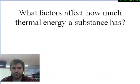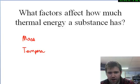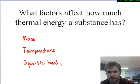So what factors affect how much thermal energy a substance has? There's actually three main factors. The first one is mass, or how much substance you have. The second one is temperature, how hot or cold is the substance. And the third one is something called specific heat, or you'll also see that written as the heat capacity of that substance.